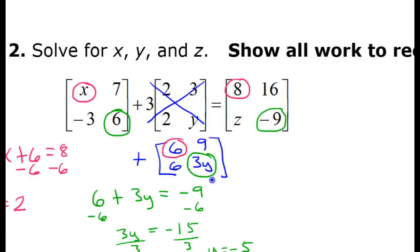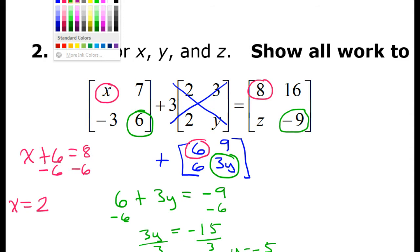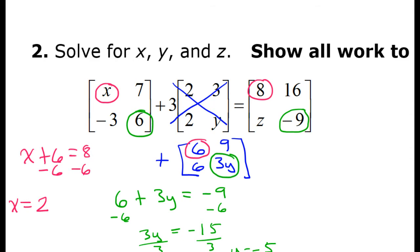And finally, how about z? So here's z right here. So these are all the corresponding elements in the same position. So that tells us that negative 3 plus 6 must equal z.